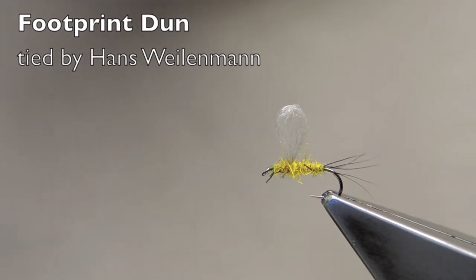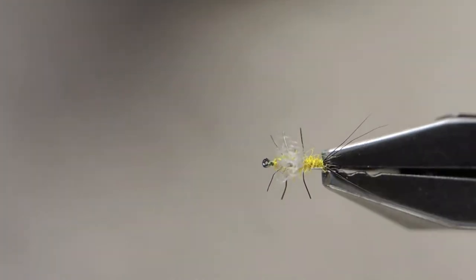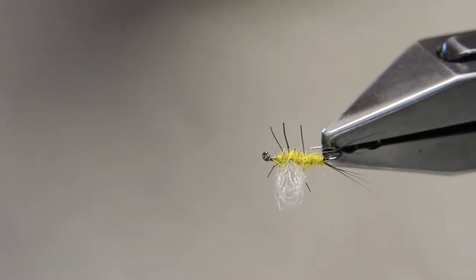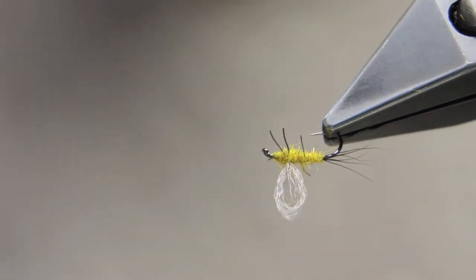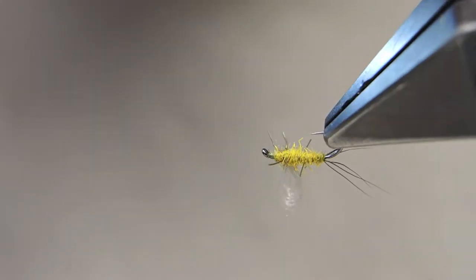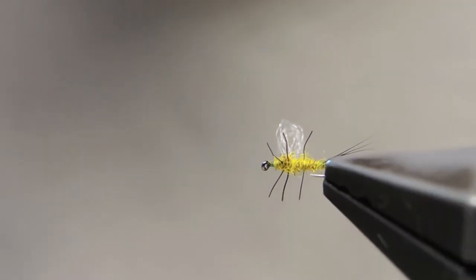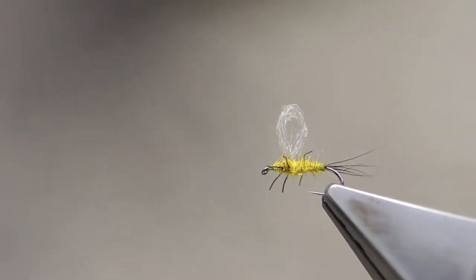The Footprint Dun, originated by Oliver Edwards, is a wonderfully effective slow-water pattern, low-riding, with a very convincing footprint which gave the pattern its name.